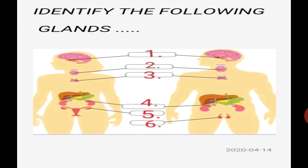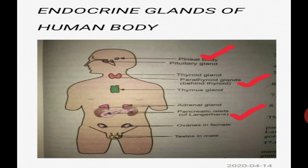Gland number five is seen only in the female body and is called the ovary. The ovary secretes the female sex hormone called estrogen. Gland number six is seen only in the male body and secretes the male sex hormone called testosterone. The name of this gland is testis. To recap: gland one — pituitary, two — thyroid, three — thymus, four — adrenal, five — ovary, six — testis.